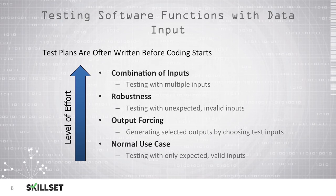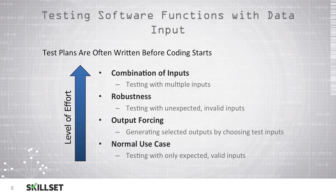Output forcing will require additional effort, where you're generating selected outputs by choosing specific test inputs. You can test the software for robustness by testing with unexpected or invalid inputs. Finally, the most comprehensive type of testing — requiring the largest amount of effort — is a combination of inputs, where you are testing with multiple different types of inputs.